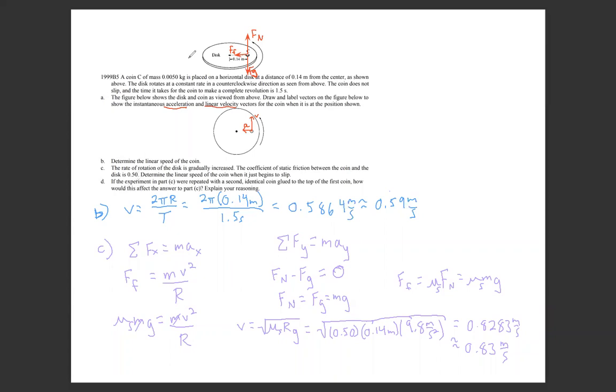Finally, part D. If this experiment in part C were repeated with a second identical coin glued to the top of the first coin, how would this affect the answer to part C? Explain your reasoning. We're looking at this equation, V equals root mu R G. If you notice, there's no mass term in there. The masses cancel. The mass is involved in the frictional force. Of course, more mass would mean more friction, but it would also be more normal force.